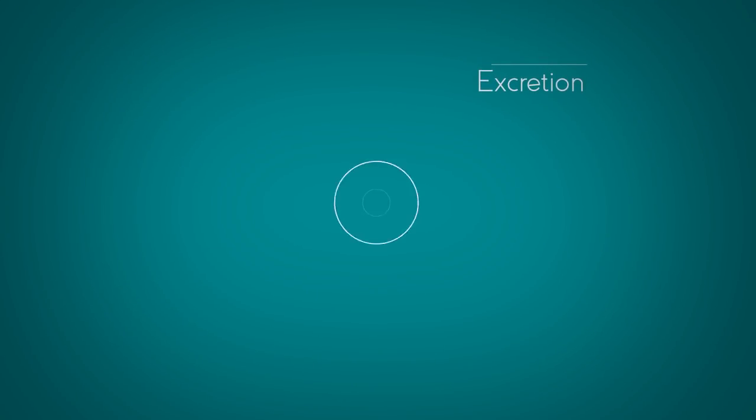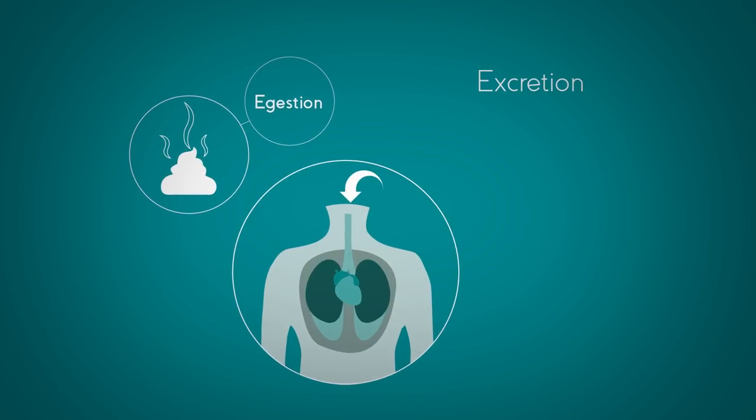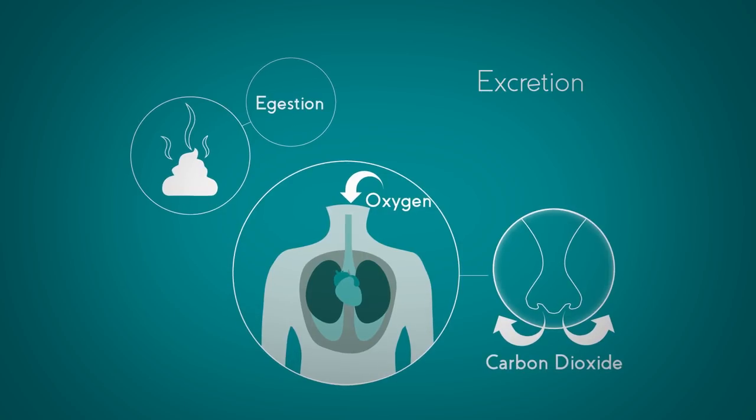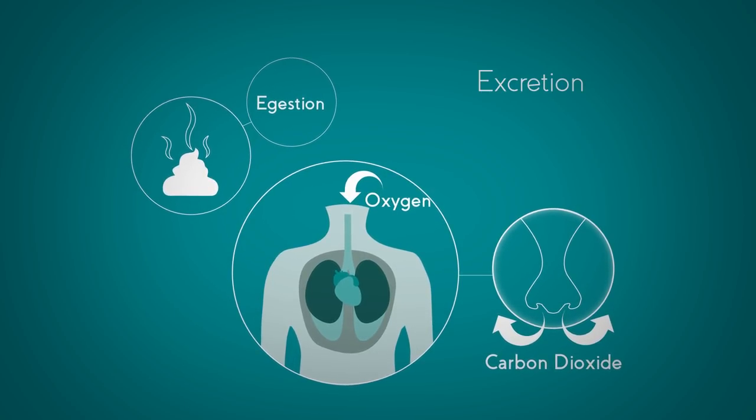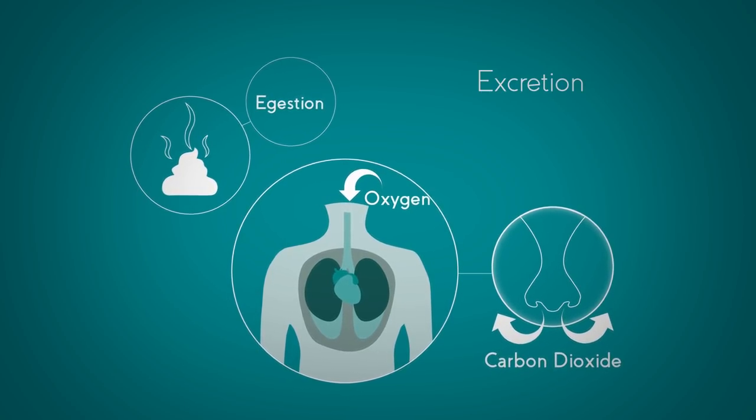Excretion is the sixth process. This is not the same as pooing, which is actually called egestion. But excretion means getting rid of waste from chemical reactions in the organism. Respiration, for example, makes waste products. And each organism needs to get rid of these. This is called excretion.